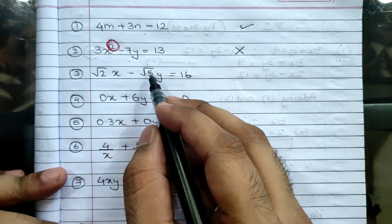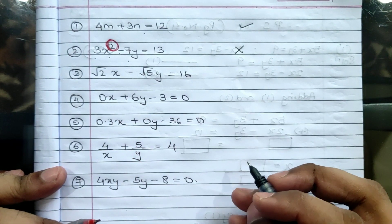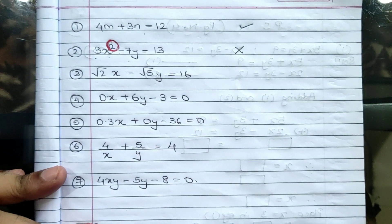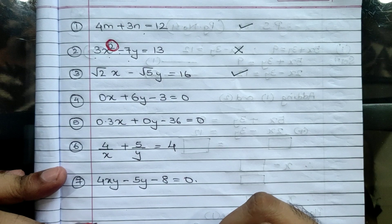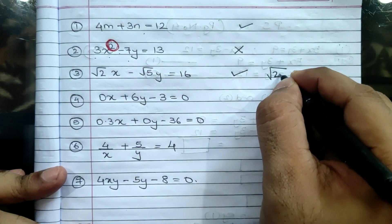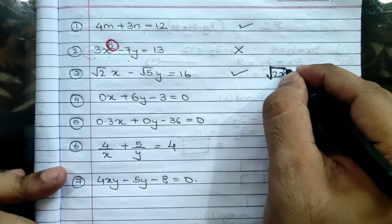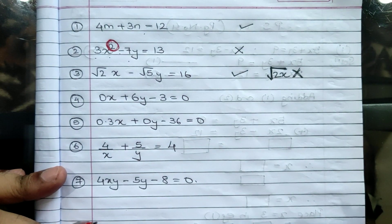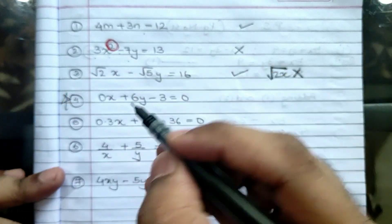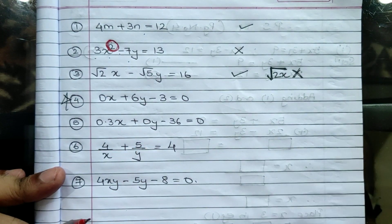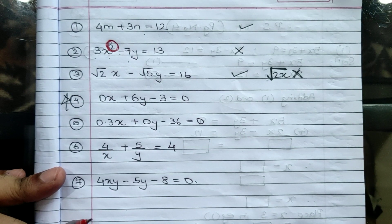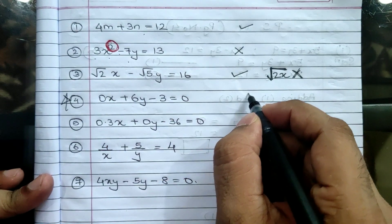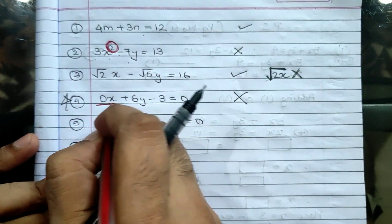Third: √2·x − √5·y = 16. Is this linear? Yes — because x and y have no power on top of them, meaning degree is 1. Note: if x were inside the square root, the answer would be different, but here only the coefficients are square roots. Fourth: 0x + 6y − 3 = 0. Is this linear equation in two variables? No — because the coefficient of x is 0, which violates the rule that A cannot equal 0.